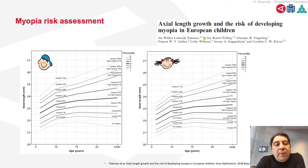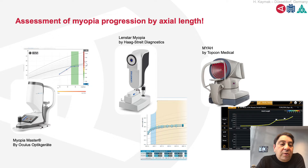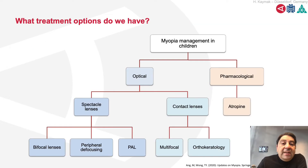When looking for myopia risk assessment, the Tiedermann curves are very important in the first place. For the progression of myopia, it's mandatory to have a biometer like from Oculus, Landstar, or from Topcon. We now have the possibility with different companies to measure axial lengths very quickly and easily.